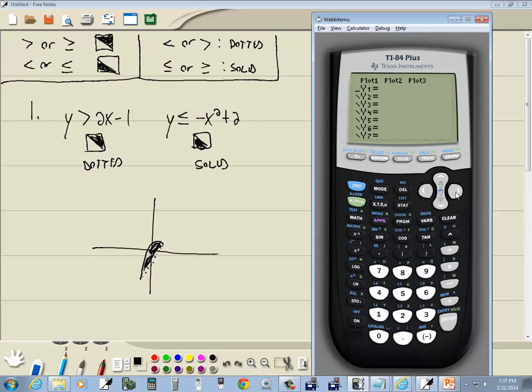And once you get back there, then you right arrow over. And of course, second mode to exit out. Anyway, that was solving, graphing systems of inequalities on a TI-84 plus calculator.